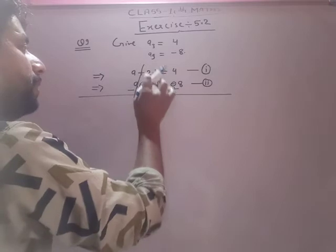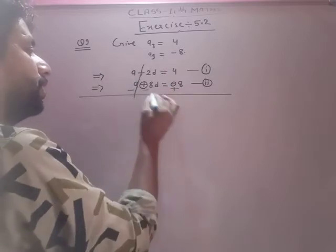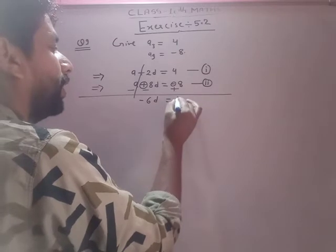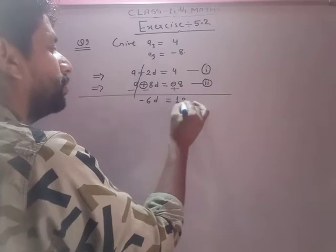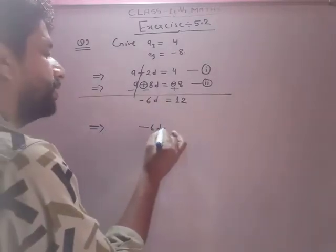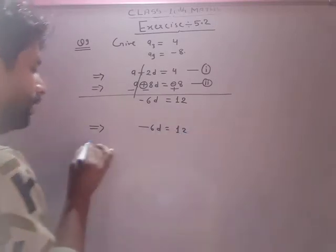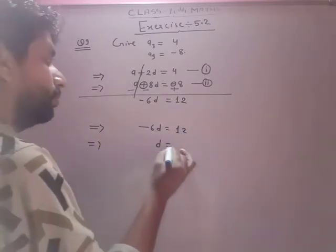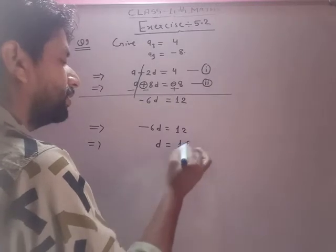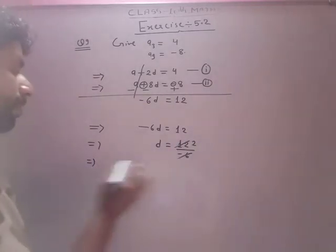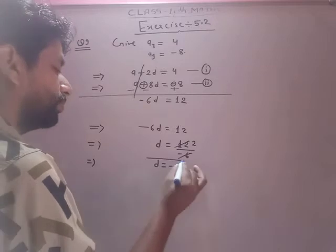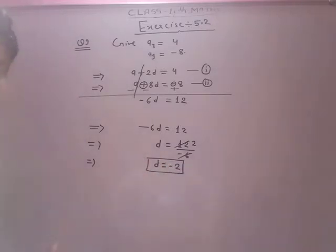Subtracting the equations: a plus 2d minus a minus 8d, which gives minus 6d equals 12. Then d equals 12 divided by minus 6, so the value of d is minus 2.